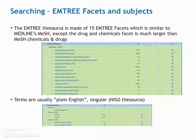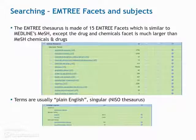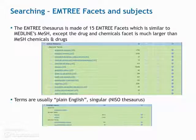The M-tree thesaurus is made of 15 M-tree facets, which are similar to MEDLINE's MeSH, except the drug and chemical facet is much larger than the MeSH chemicals and drugs tree. The terms are usually plain English and singular, and they are contained in an ANSI/NISO style thesaurus.